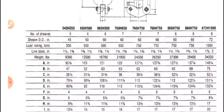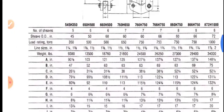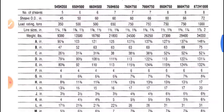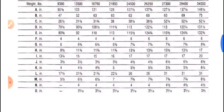The number of sheaves — five, six, seven, or eight — depends upon the requirement. The sheave diameter ranges from 45 inches to 72 inches. Additional specifications include load rating in tons, line sizes, and weight in pounds.